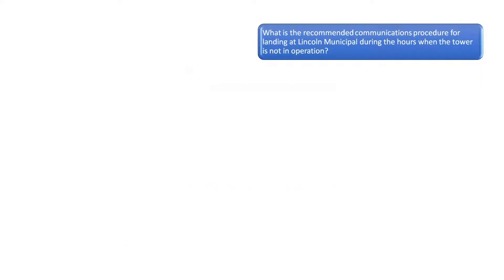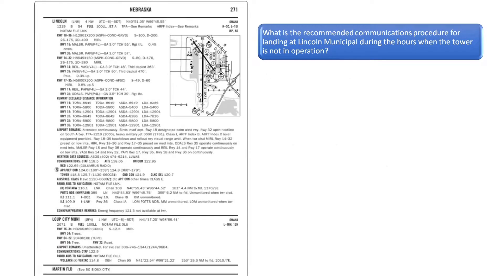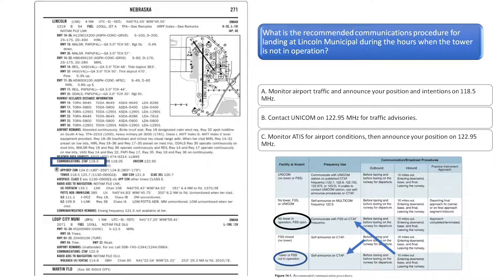What is the recommended communications procedure for landing at Lincoln Municipal Airport during the hours when the tower is not in operation? As illustrated in the chart, the recommended communication procedure when the control tower is not in operation is to communicate intentions on the common traffic advisory frequency, abbreviated CTAF. As indicated in the chart on the left, the common traffic advisory frequency for Lincoln Municipal Airport is 118.5. The correct answer is A. Options B and C would not apply since 122.95 is the unicom frequency for Lincoln Municipal Airport.